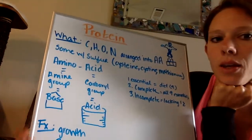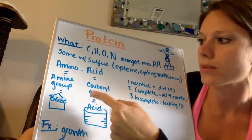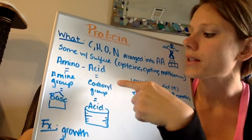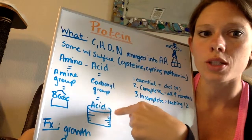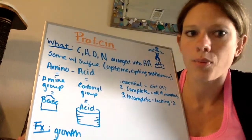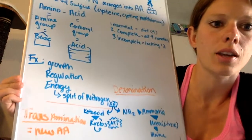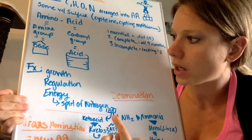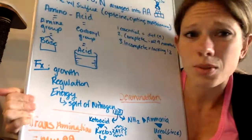So what is the amino acid? It's going to be an amine group which is going to be our base and then it's going to be a carboxyl group which is going to be our acid. That's going to be important to know when we start looking at how we're going to use protein for energy. So you see here it's for growth, regulation, and can be used for energy.